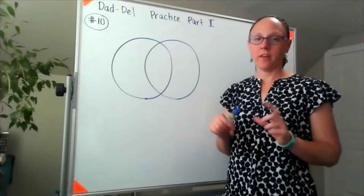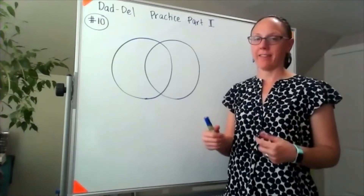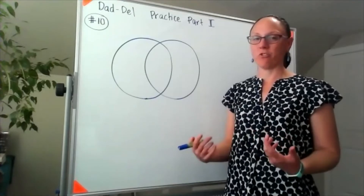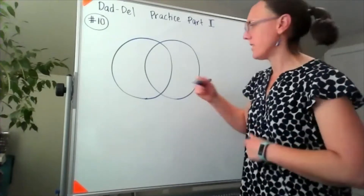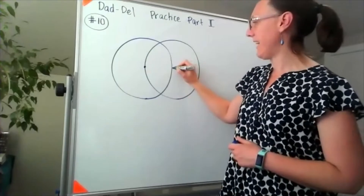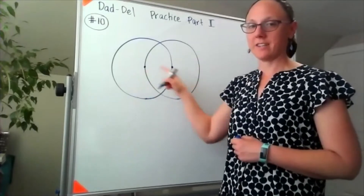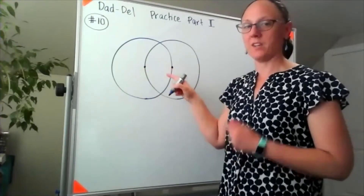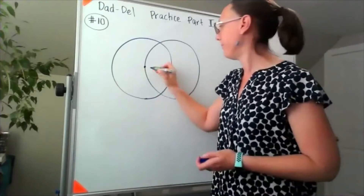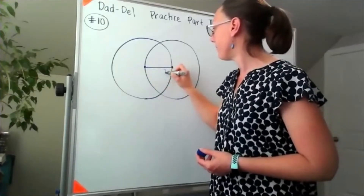We're told that they overlap such that the outside of each sphere is at the center of the other sphere. So that means this is the center of that sphere and this is the center of this sphere, so the distance between them is one radius, or R.